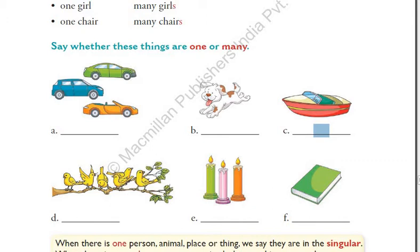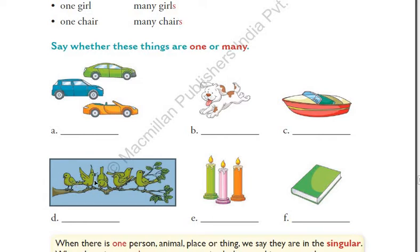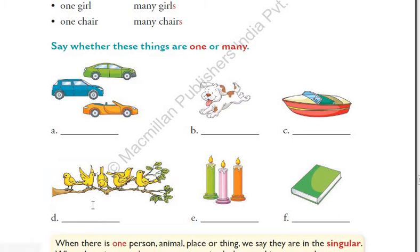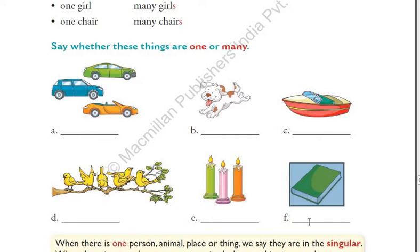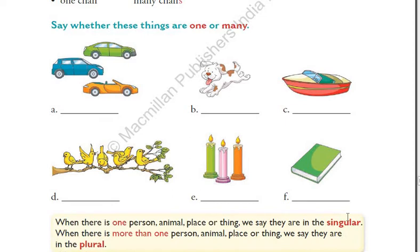Let me solve the homework pictures for you in case you have any doubt. In the first picture, you can see not one but many birds — if we count, there are six birds. So we write 'many.' In the next picture, three candles are there, so again we write 'many.' And the last picture shows only one diary or book, so we write 'one' in that blank.